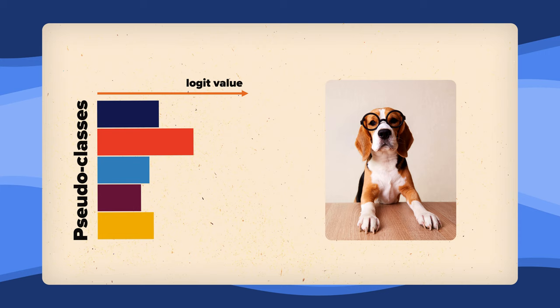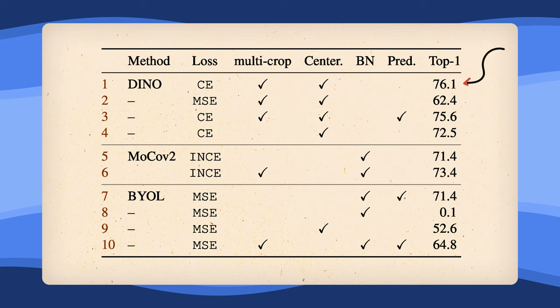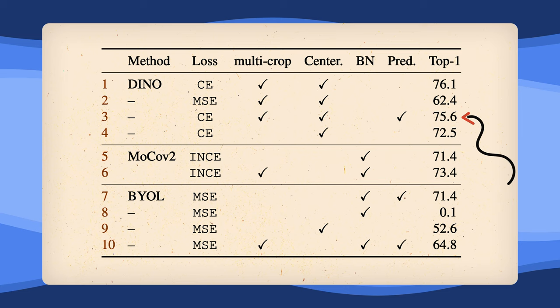And why is there this cross-entropy and not the mean square error like in BYOL? The mean square error surprisingly does work with DINO, but cross-entropy simply seems to work better. DINO also works when adding a further prediction head to the student network, but that doesn't seem to help much either.